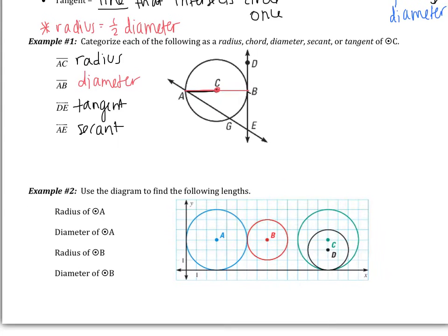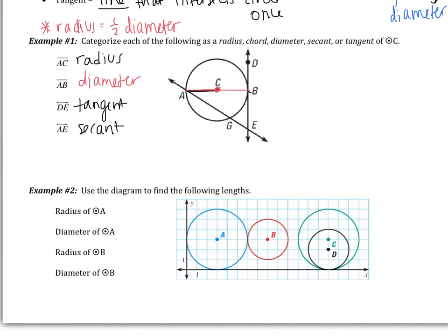In Example 2, we find the radius and diameter of two circles. For circle A, the radius is 3 units long, so the diameter must be 6 units — double the radius. Going from one side of the circle to the other through the center confirms 6 units. For circle B, you should have gotten a radius of 2 and a diameter of 4.